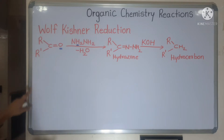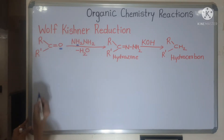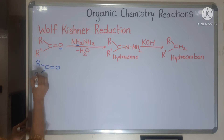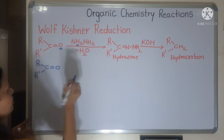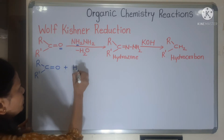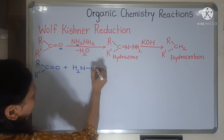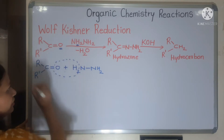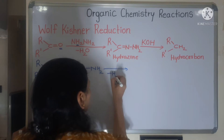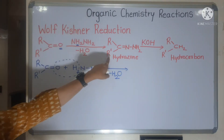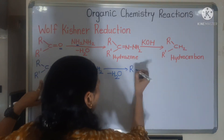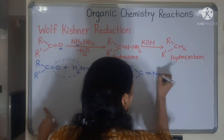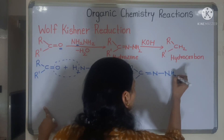Now let's start with the mechanism. In the first step, RC(=O)R' reacts with hydrazine (H2N-NH2). The oxygen and hydrogen eliminate as H2O, and we get hydrazone — that is RC(=NNH2)R'. This is your hydrazone species: R-C(=N-NH2)-R'.